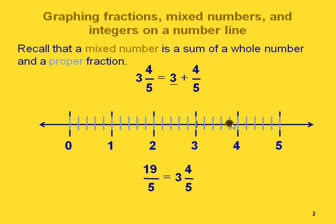Another way to think about this is that we could write 3 and 4 fifths as an improper fraction. That would be 19 fifths. And if we count over from zero and count how many fifths we have, here we'd have 5, 10, 15, and another 4 would be 19. So we could also think about graphing it that way.